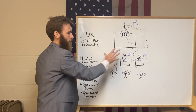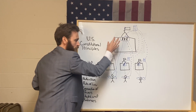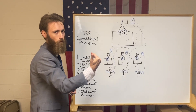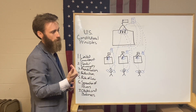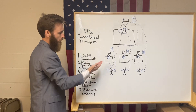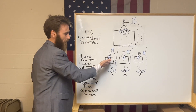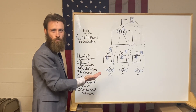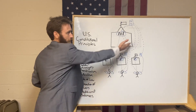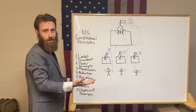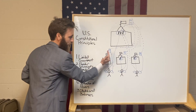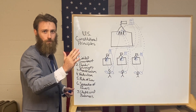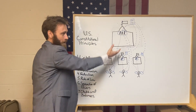Many people today are under the impression that the federal government can always overrule the state government, that the state government can do nothing contrary to the wishes or laws of the federal government. This is not true at all. Remember — did the state governments give the federal government all their power? No. They only gave them half the power anyway. The power they didn't give to the federal government, they kept.